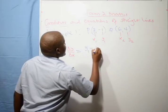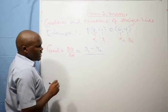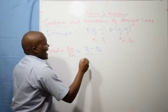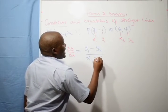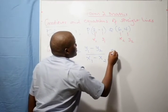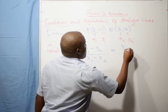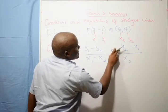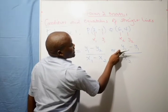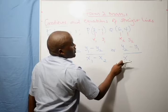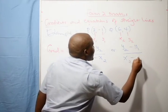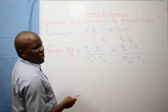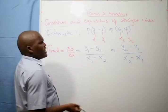It can be written as y1 minus y2 over x1 minus x2. Because you started with y1 in the numerator, you must be consistent and start with x1 in the denominator. Or it can be y2 minus y1 over x2 minus x1. For consistency, because in the numerator you started with the second point y2, so here you start with x2 minus x1.